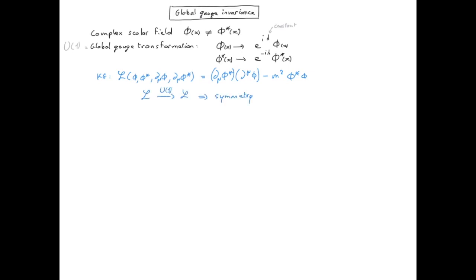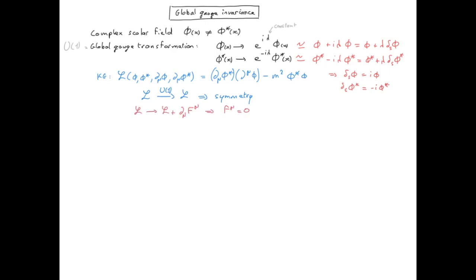So let's now identify the quantities which are relevant for the expression for the conserved current associated with this symmetry. We first need to consider infinitesimal transformations, that is when lambda is small. And because the Lagrangian is unchanged, we can take the function f-mu to be equal to zero. We can now write a Noether current for this symmetry. We have two terms because there are two dynamical variables — the field phi and phi star — appearing in the Lagrangian, and because f-mu is equal to zero, there is no additional term.